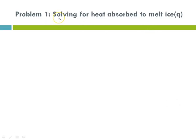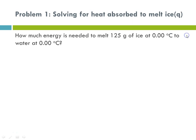I thought we would begin by solving for the heat absorbed when ice is melted. Heat absorbed or released is always the variable q. Here's the problem: how much energy is needed to melt 125 grams of ice at zero degrees C to water at zero degrees C? Since temperature is constant, we know we're at the phase change, and the word 'melt' is a tip-off, too.